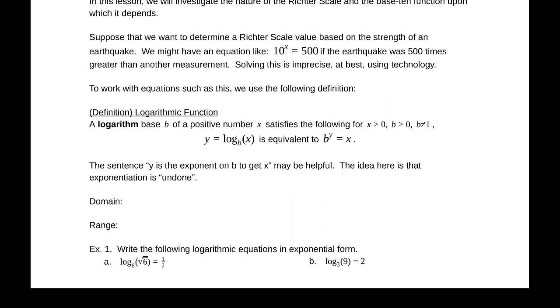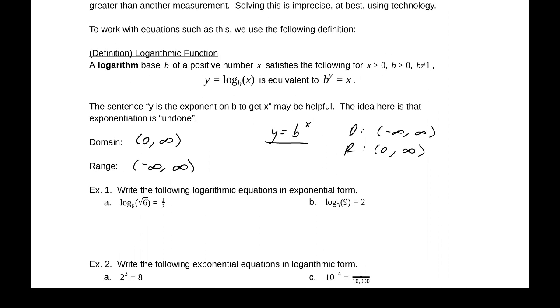So the domain for b to the x, for our exponential, the domain was negative infinity to infinity, and the range was 0 to infinity. Because these are inverses of each other, the domain is 0 to infinity of a logarithm base b, and the range is negative infinity to infinity. And we'll discuss that more in the next section.